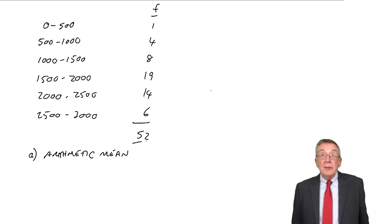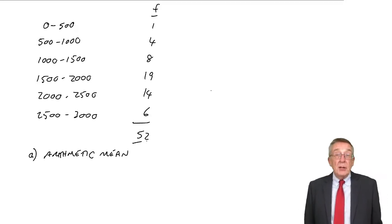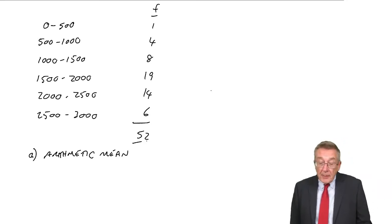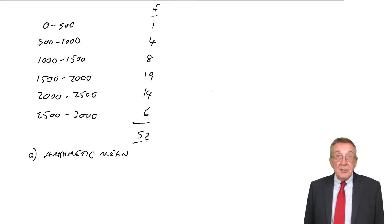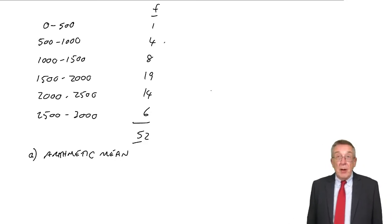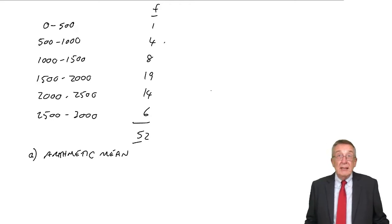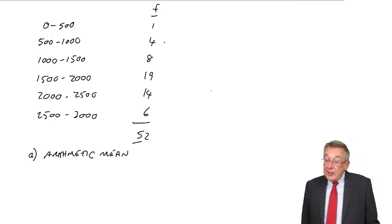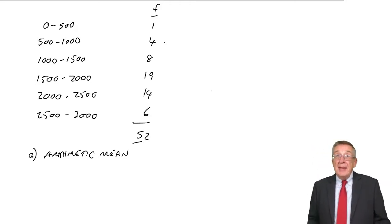Basically, we're adding all the observations up and dividing by the total number. But the problem here is that first observation. What was it? Somewhere between 0 to 500, but we don't know what it was. Was it 100? Was it 400? I don't know. These four, they were all somewhere between 500 and 1,000. But we don't know, were they 550? Were they 820? Whatever. And so what we do, we replace each range by the midpoint.